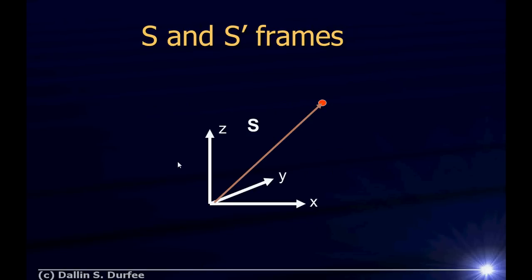First, as a reminder, a lot of times when we do relativity, we're seeing how something appears in one reference frame and then trying to understand what would happen in another reference frame as viewed by somebody who's moving with respect to you. So we start in a reference frame that we label the S frame and some space-time event happens, which has X, Y, and Z coordinates and happens at some time T.